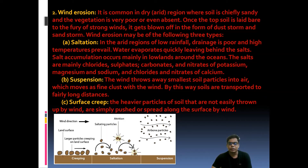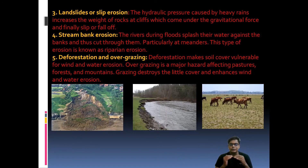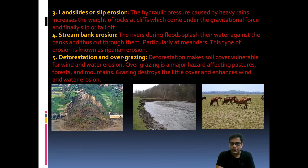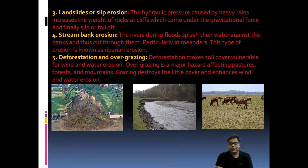The next type is landslide or slip erosion. When there is very heavy rainfall, the hydraulic pressure causes cliff areas to experience landslides. Landslides mainly occur in mountain areas. Suddenly there is a loss of gravitational contact among the soil and rocks, and they fall from up to down. As you can see in the diagram, the left corner shows landslide and the right side shows slip erosion.